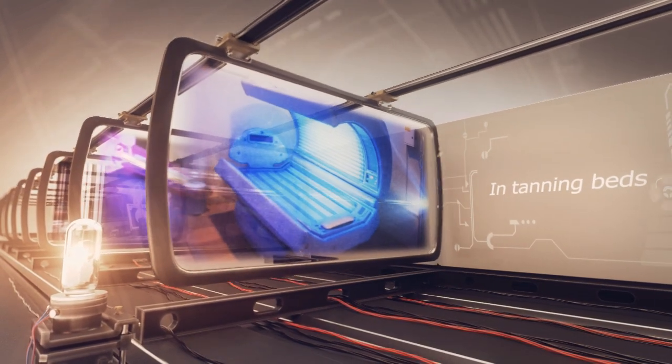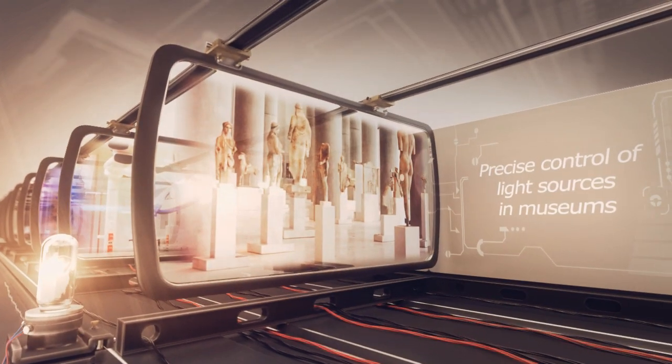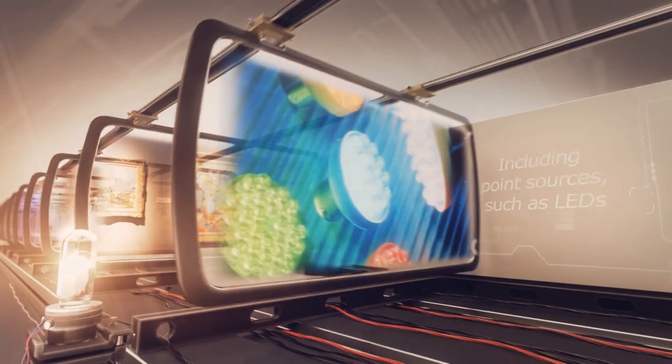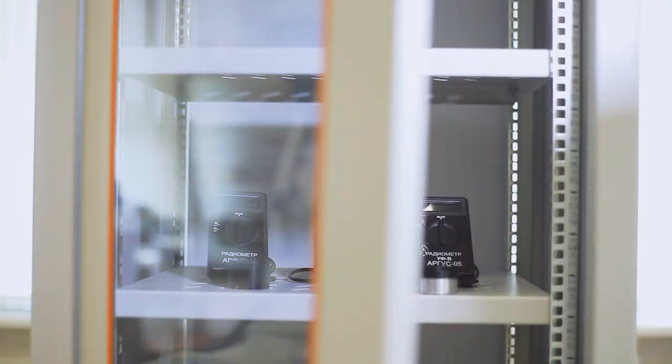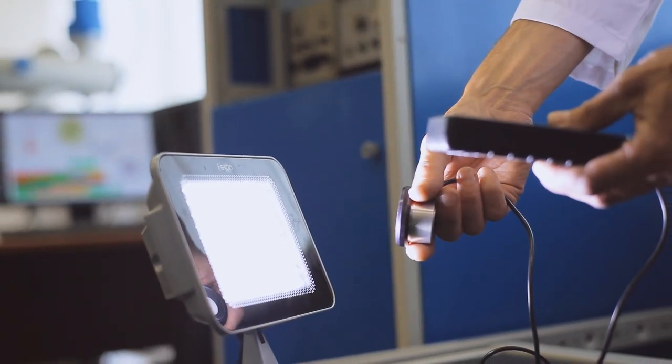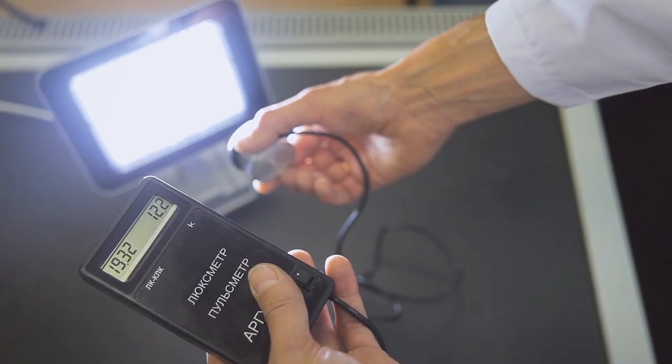For example, in tanning beds or surgeries, precise monitoring of light sources in museums and art galleries, including point sources such as LEDs. To monitor the light pulses, which can severely interfere with health and mental state, the Institute has developed special devices—pulse meters.